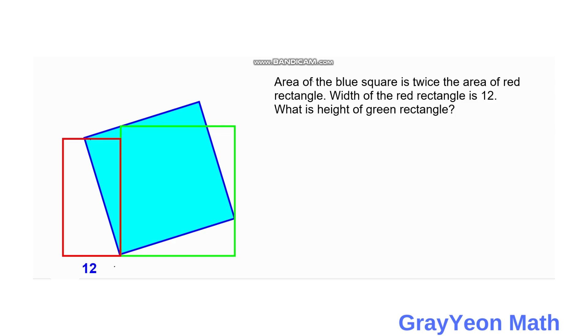Welcome to Gray on Mac. We are asked to solve this problem: the area of the blue square is twice the area of the red rectangle. The width of the red rectangle is 12. What is the height of the green rectangle?